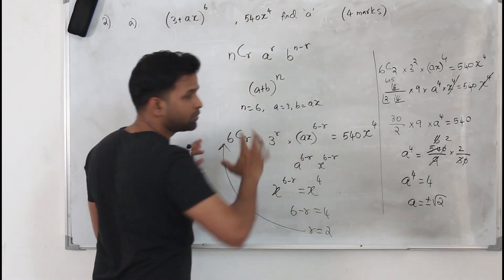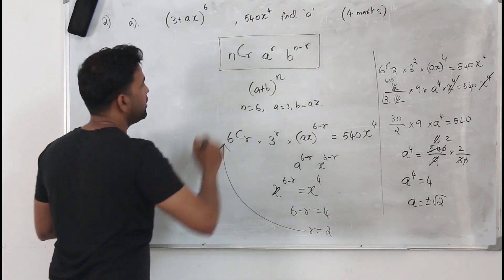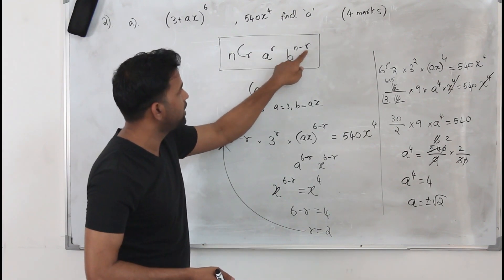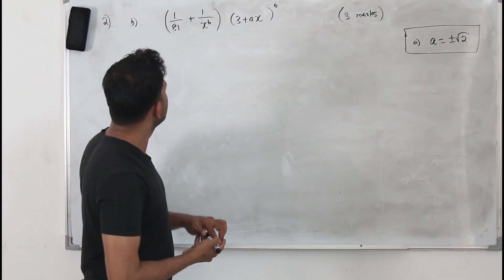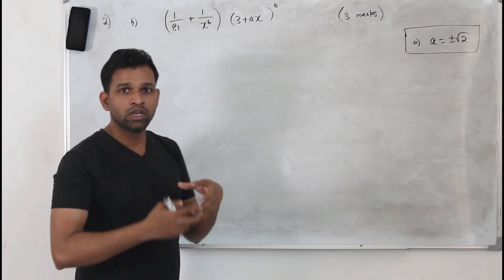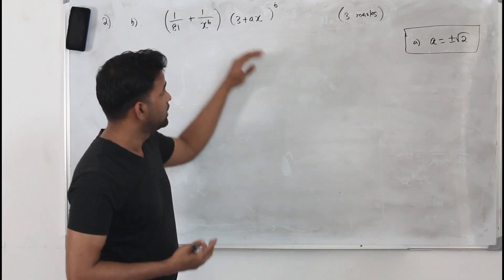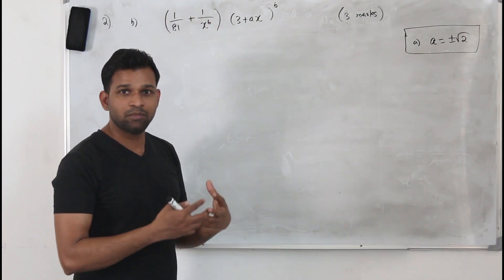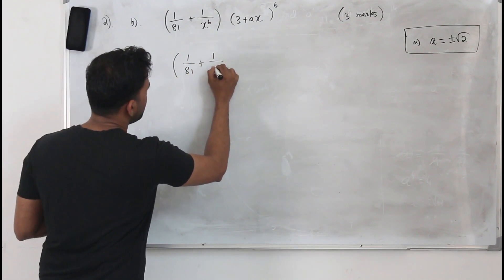That's how you deal with binomial expansion when a particular term is given — remember the nth term formula nCr × a^r × b^(n-r). Part b: hence find the term independent of x in the expansion of (1/81 + 1/x^6)(3 + ax)^6. We need to find the constant term after multiplying these two expressions.